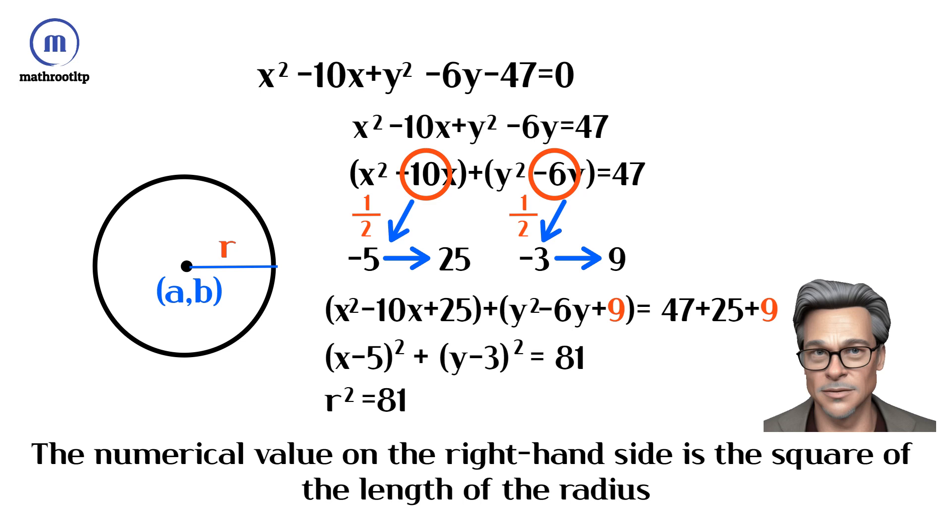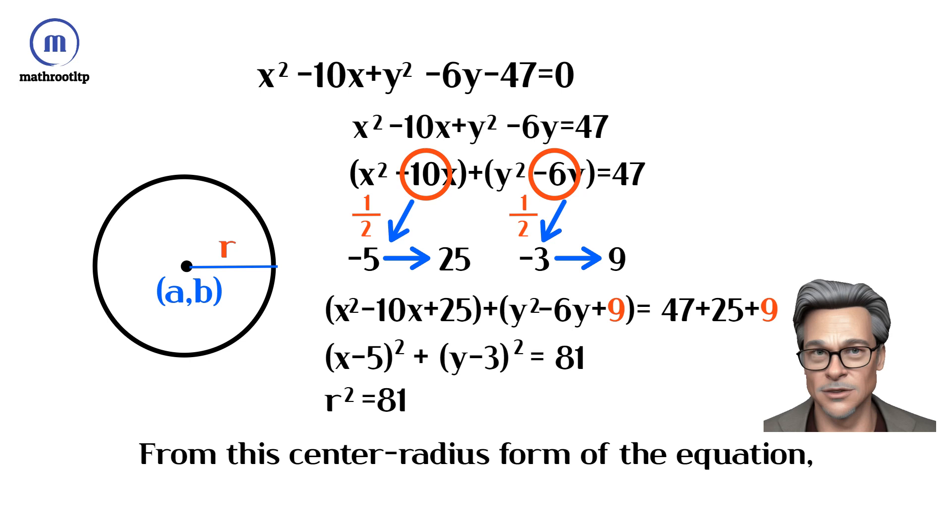The numerical value on the right-hand side is the square of the length of the radius. From this center radius form of the equation, the radius of the circle is 9.